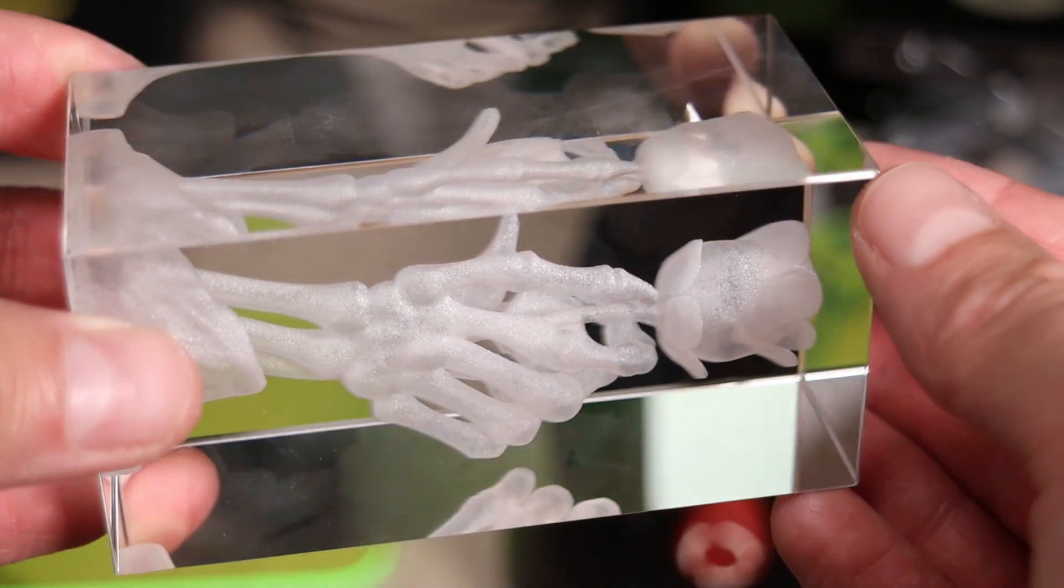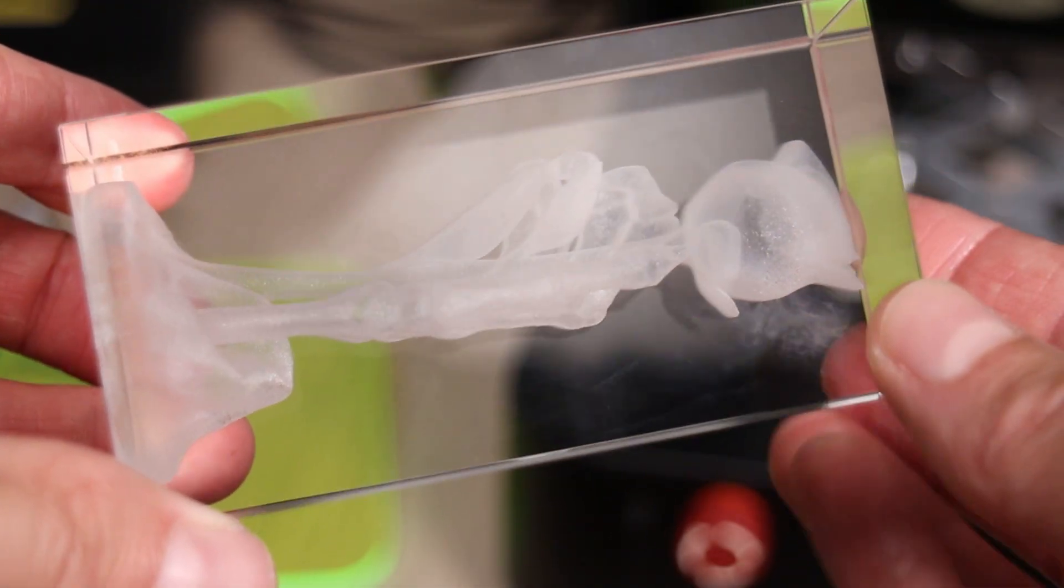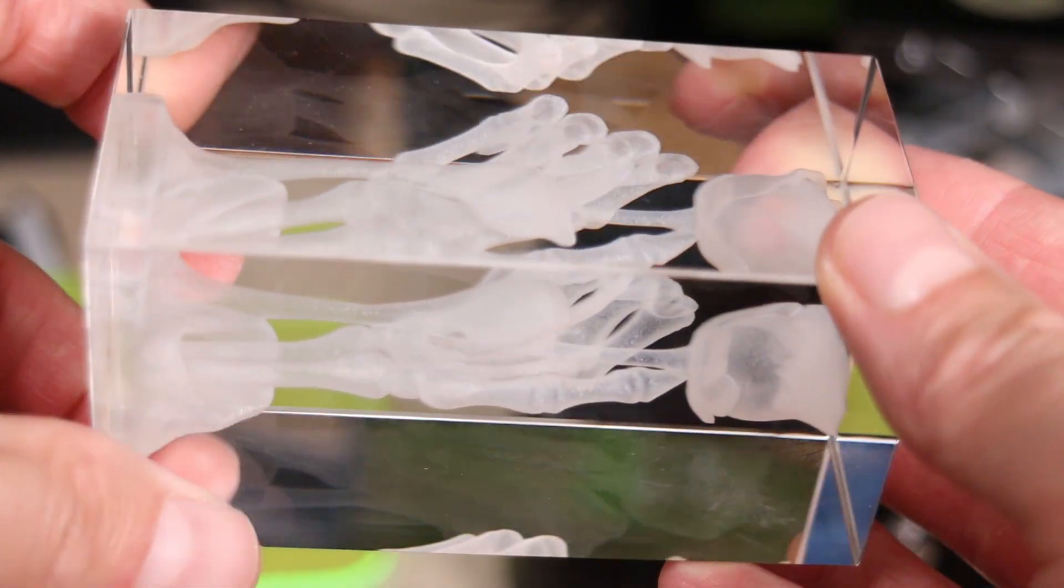The machine works layer by layer, starting at the bottom of the crystal and gradually raising the Z-axis after each pass, much like a 3D printer. Because the 70mm lens has such a shallow depth of focus, the laser is essentially engraving thousands of tiny dots inside the glass. The end result is absolutely breathtaking. One of the most beautiful things I've ever created with a laser engraver.